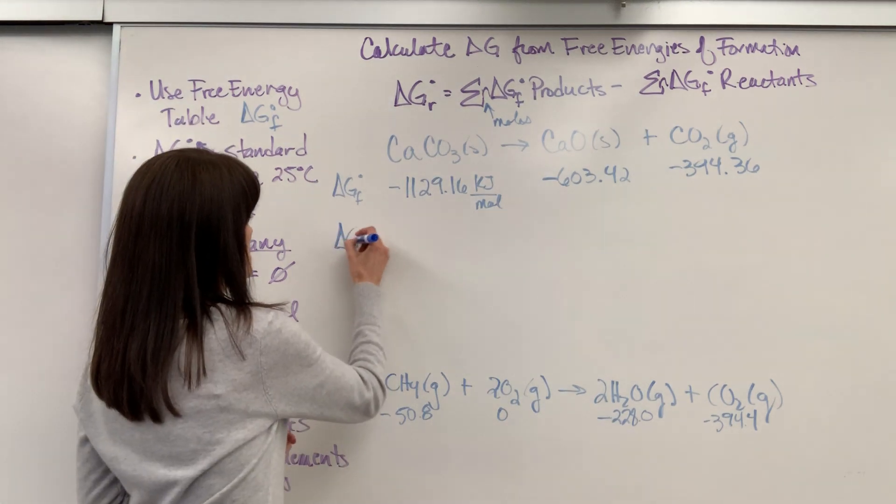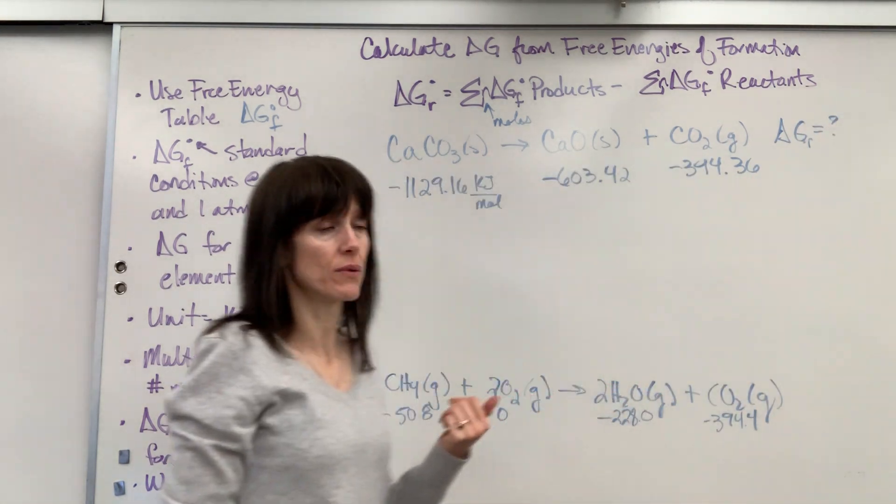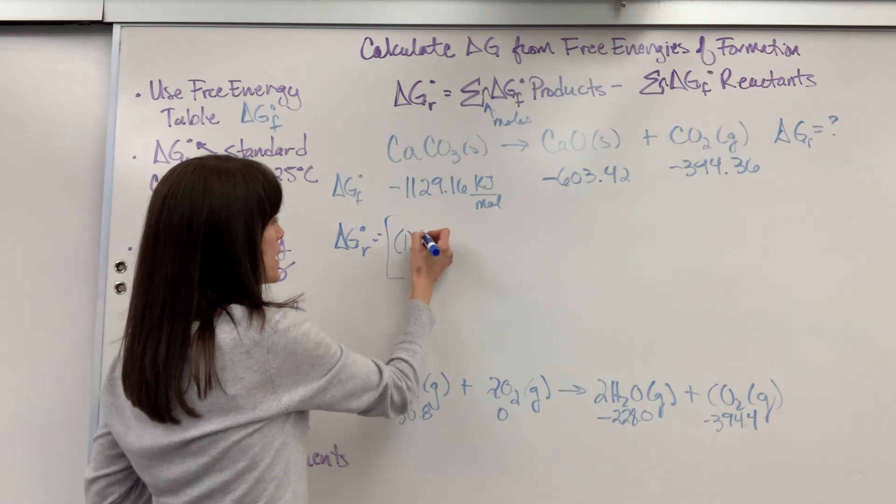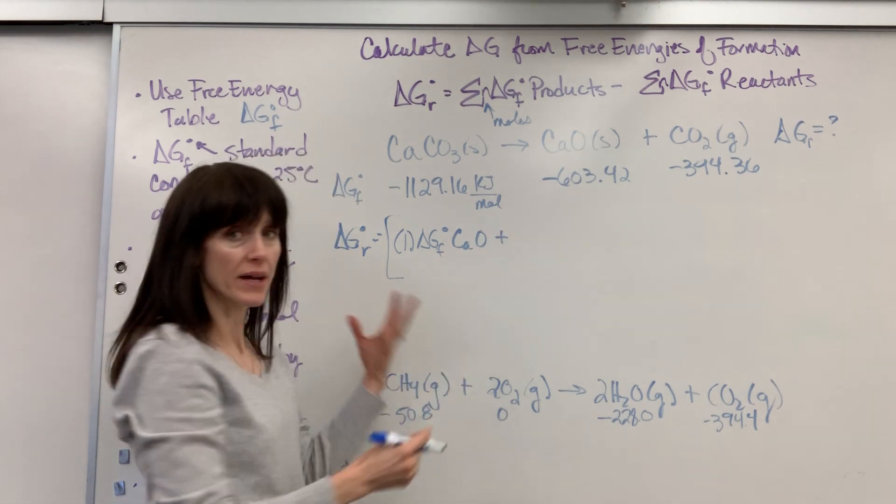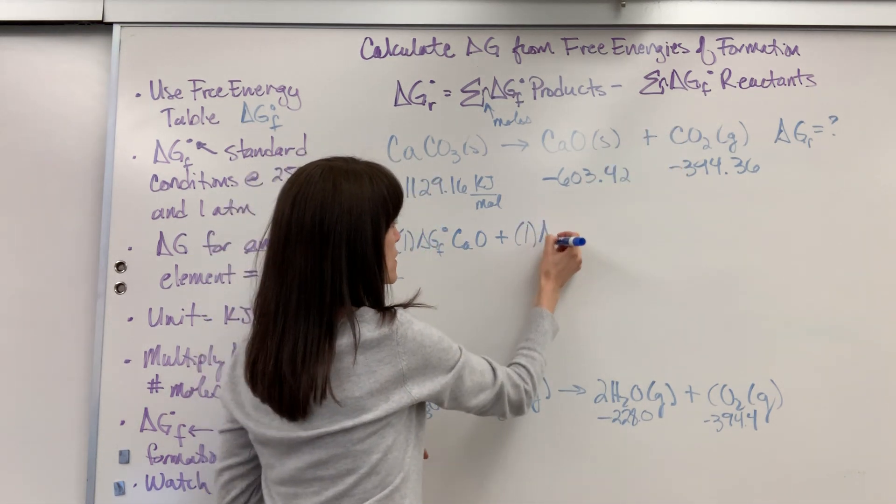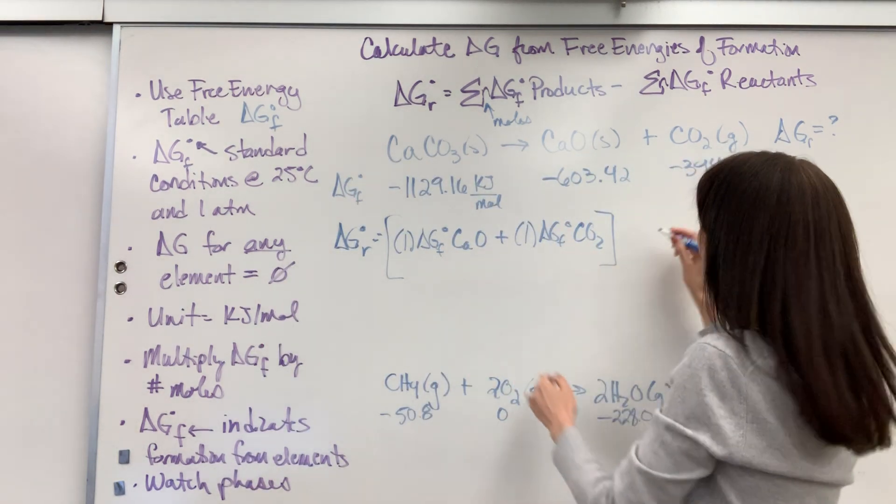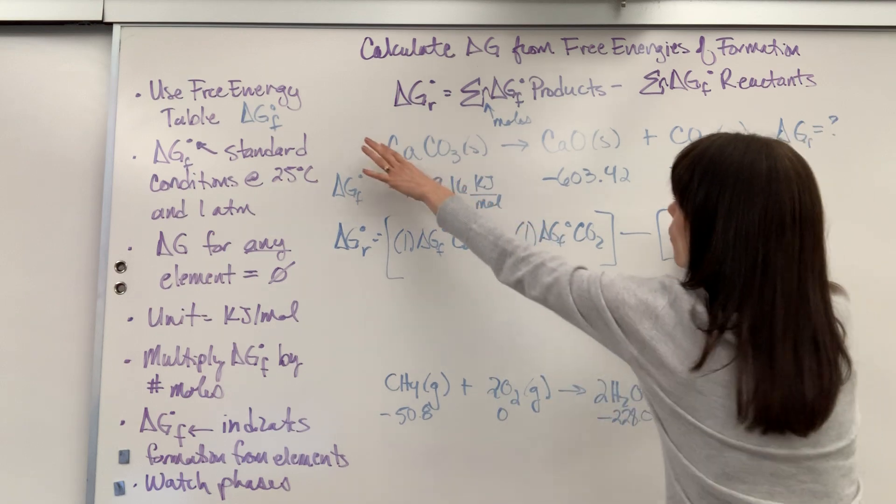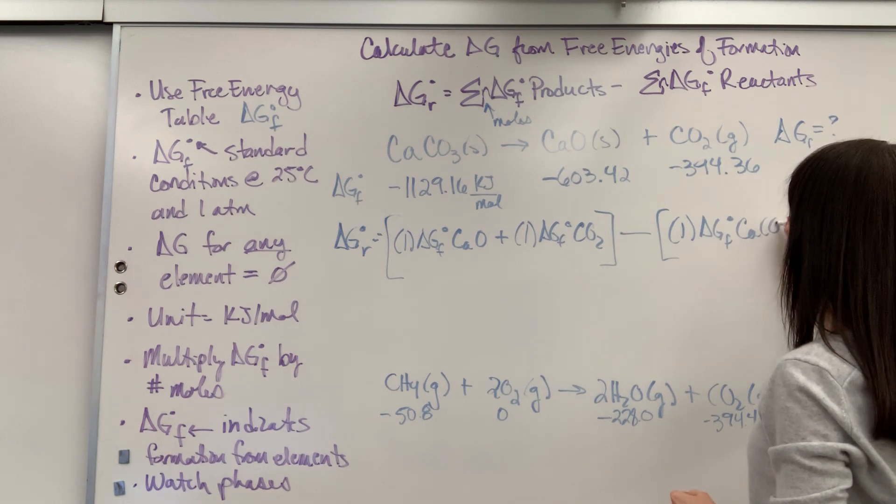So we will start with delta G for the reaction. The total, I want to find the delta G for this whole reaction. That's what we're looking for right here. So it's going to be products. So I look at my products. I've got one mole times the free energy of formation of calcium oxide, plus, because this is summation, I have to add the other product to it. One mole, so I've got one mole right there, times the free energy of formation of CO2. So we have just added up all the products. Minus, so great big fat minus sign, minus reactants. So for our reactants, we're going to have one mole times the free energy of formation of calcium carbonate.